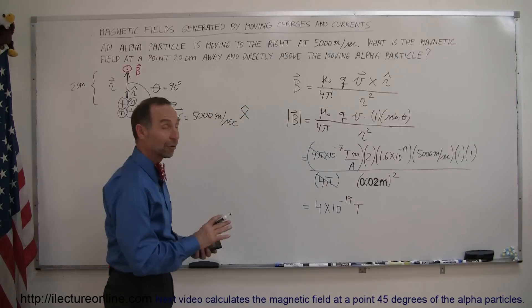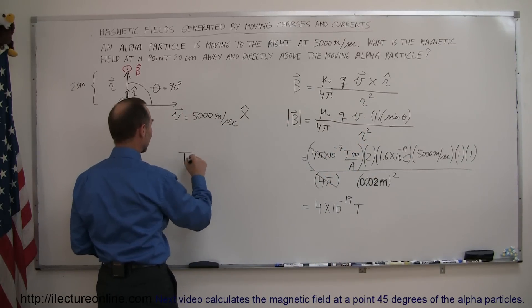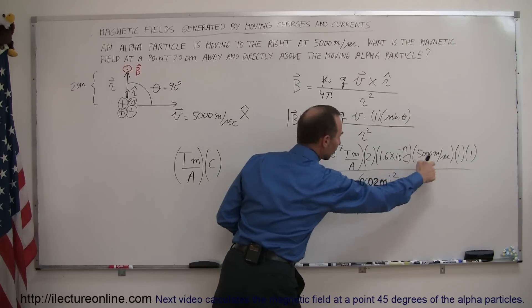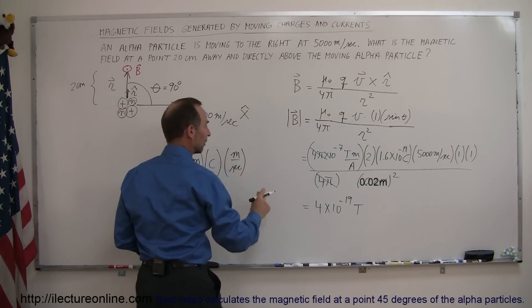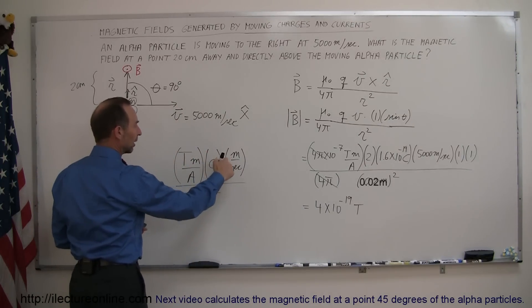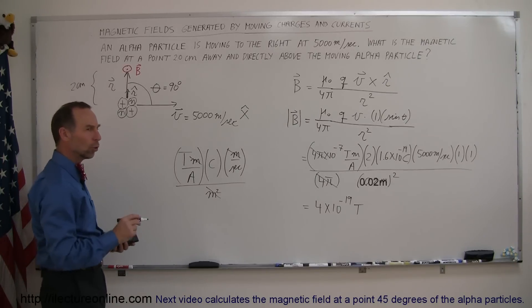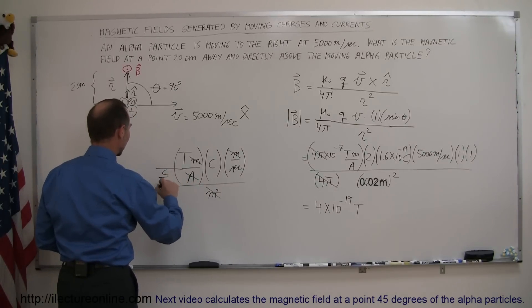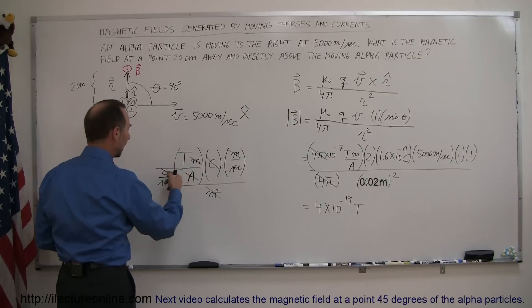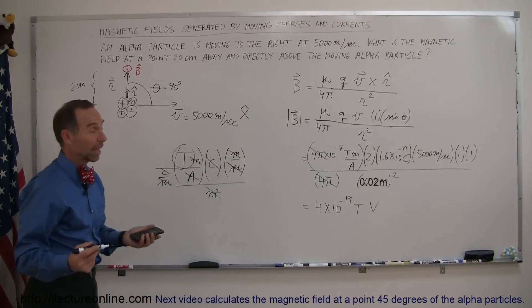To verify units: we have T·m/A × C × m/s divided by m². The meters cancel. Replacing amps with coulombs per second, the coulombs cancel and the seconds cancel, leaving teslas. So the units confirm our answer is correct.